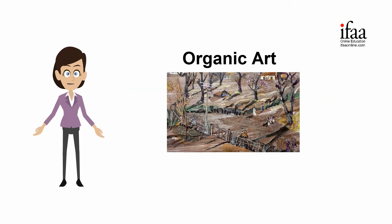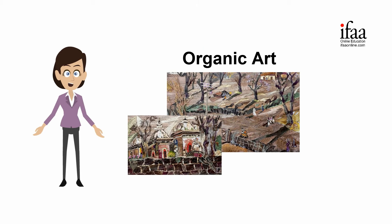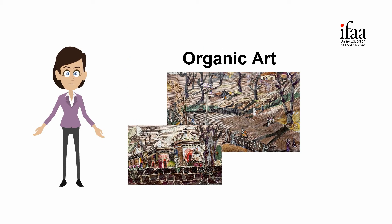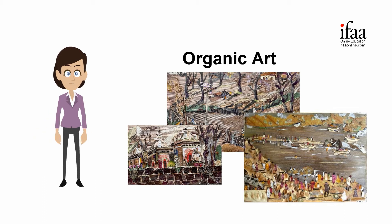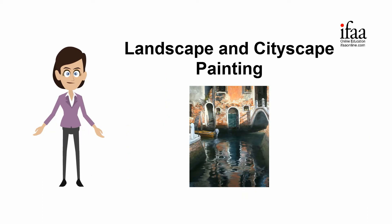In organic art, art will be created by using ingredients like dried flowers, leaves, petals, twigs, grass, etc. It consists of 10 topics.